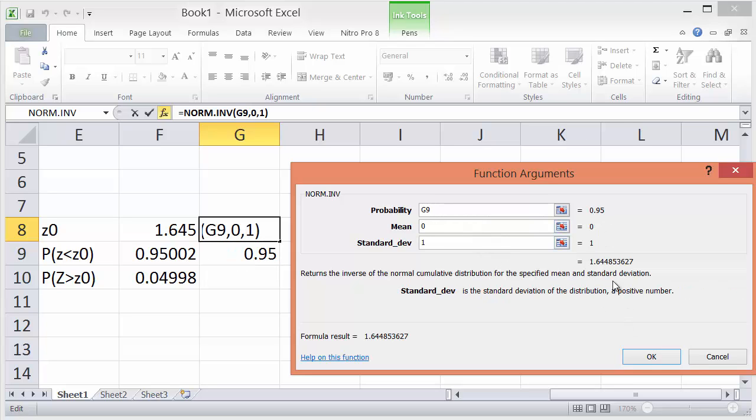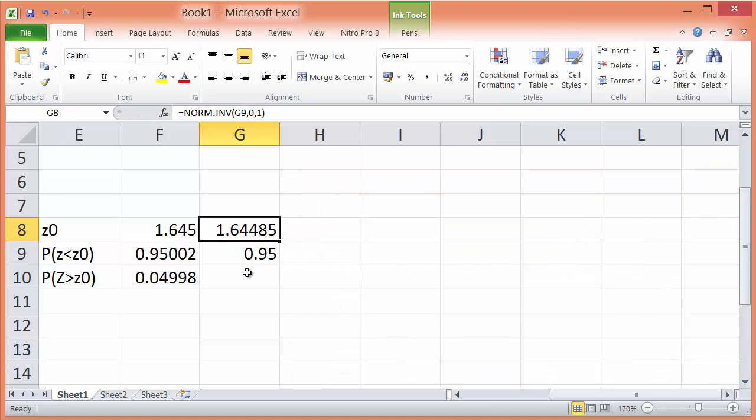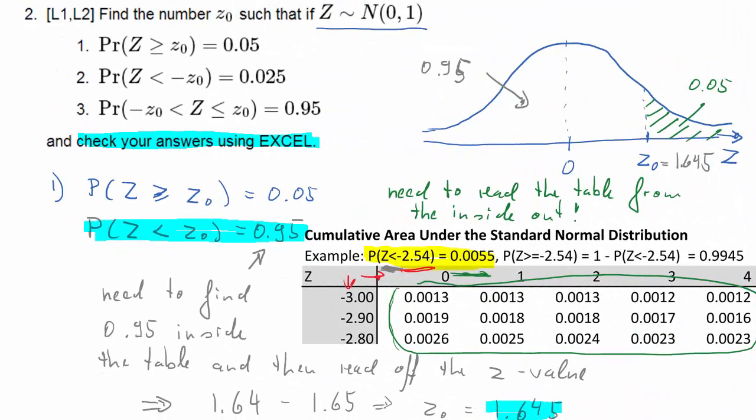So the probability, mean and standard deviation. And we are given a value of about 1.645, but not quite. So that would be the exact solution. So that's correct.